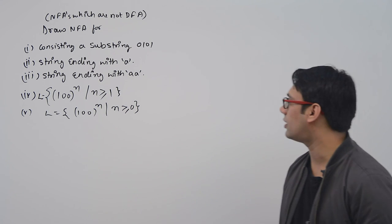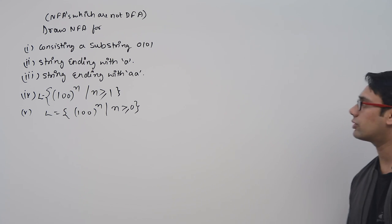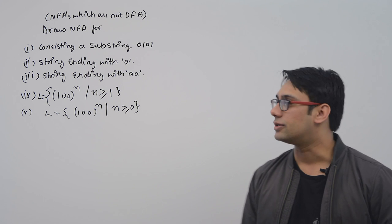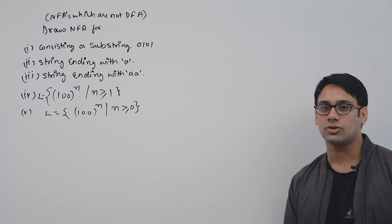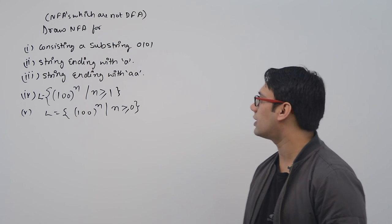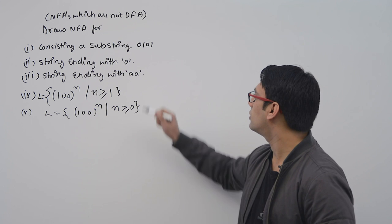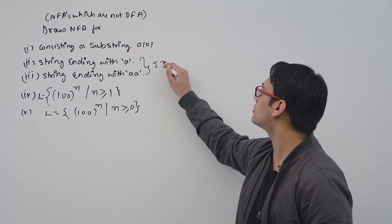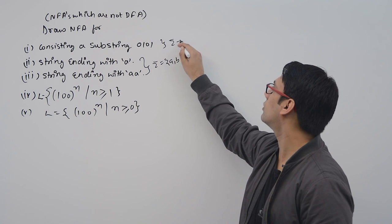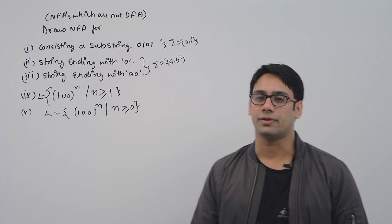Let us look at these questions. First, we are going to draw an NFA which is not representing a DFA. The first one consists of a substring 0101. The second is strings ending with single A, and strings ending with double A. These are over the alphabet {A, B}. For the first problem the alphabet is {0, 1}, and for both the second and third cases the alphabet is also {0, 1}.